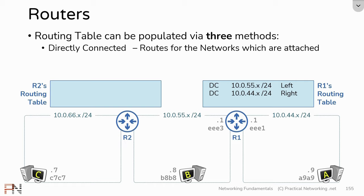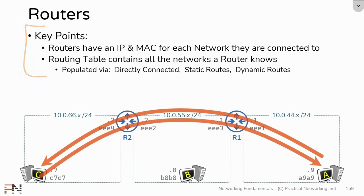That wraps up our discussion of the three ways that routing tables can be populated, and that also wraps up our discussion on routers. The main takeaways for this lesson are: routers need an IP address and a MAC address for each network they are connected to; routers maintain routing tables, which are a map of every network the router knows about; and those routing tables are populated via three different methods — directly connected, static routes, and dynamic routes. In part two of this lesson, I'm going to show you every single step that occurs for a packet to get from host A all the way to host C and back. I hope you enjoyed this video — thanks for watching, and we'll see you in the next one.